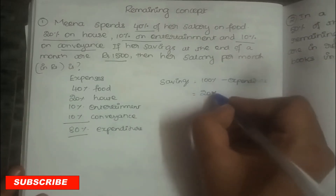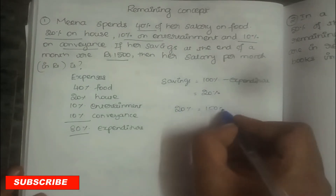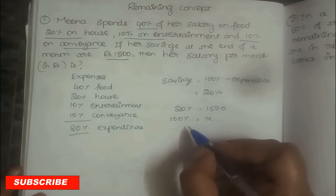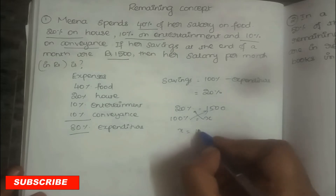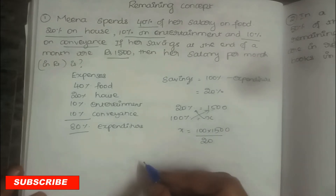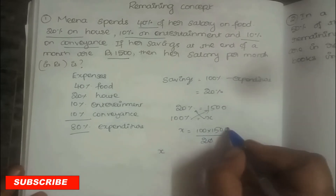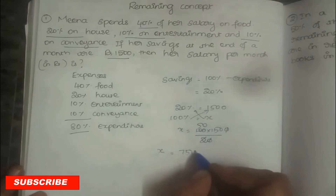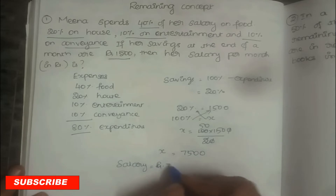Savings is 20%, and 20% savings equals Rs. 1,500. To find the 100% salary amount, take it as X. Cross multiply: X = 100 × 1,500 ÷ 20 = 7,500. So the salary is Rs. 7,500.